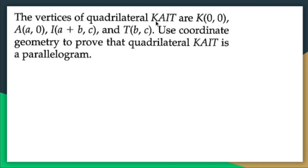The vertices of quadrilateral KAIT are K (0, 0), A (a, 0), I (a+b, c), and T (b, c). Use coordinate geometry to prove that quadrilateral KAIT is a parallelogram. There are several ways to prove something is a parallelogram, but the easiest is to show that two pairs of opposite sides are congruent.